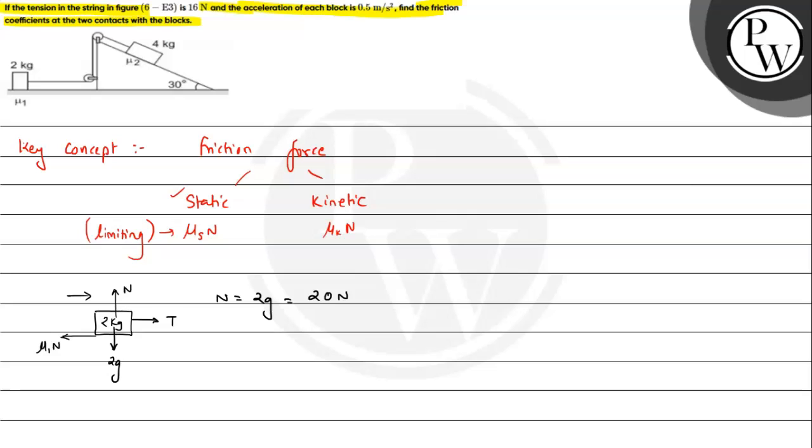Let's say this block is moving in this direction with acceleration 0.5 meter per second square, which we have given as a. By Newton's second law, F net equals to mass into acceleration along the horizontal direction. Along x axis, we can write F net, that is T minus μ1 N, will be equals to m into a.